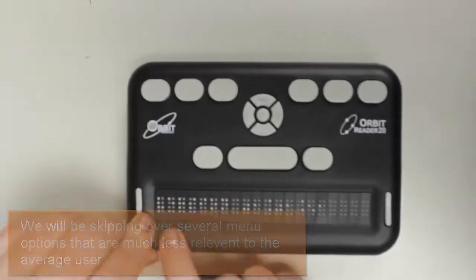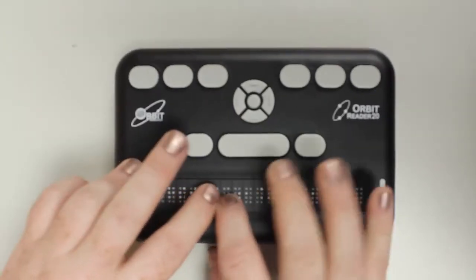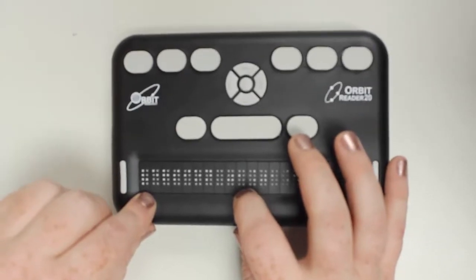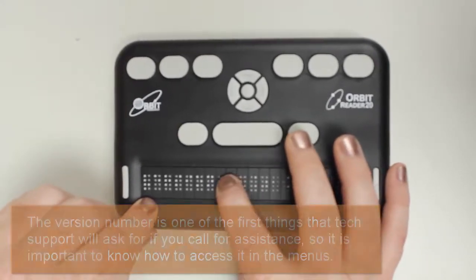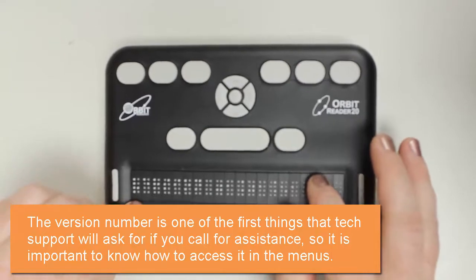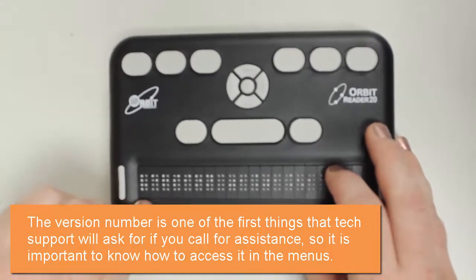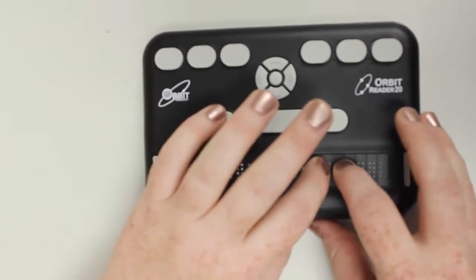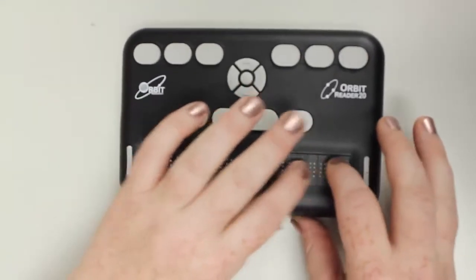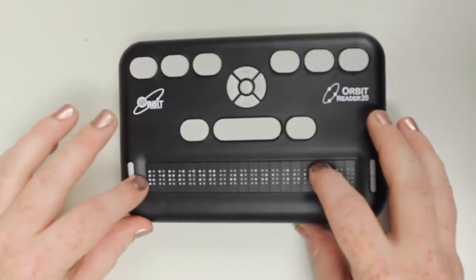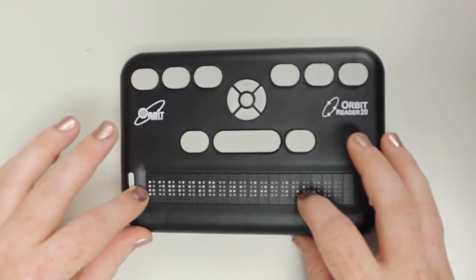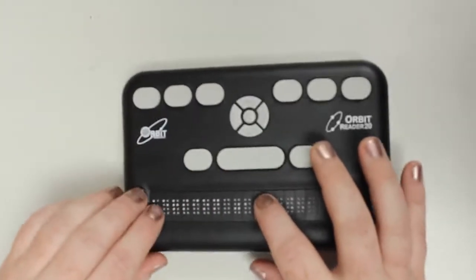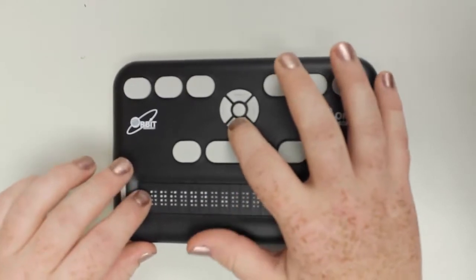The one you're going to want to pay attention to is the version number. Because when you call tech support and tell them there's something that's not working right, that's one of the first things they're going to ask you. What is the version number of the software? I can tell right now we're on version 1.01.51, and that is not the current version. The current version as of today's date is 1.01.54, so I'll have to do an update.